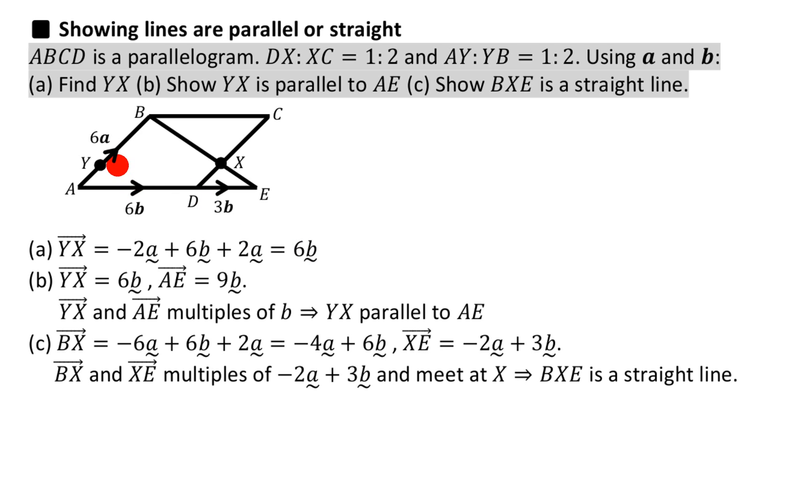Alright, so this is useful for the next bit. From Y to X is 6b. Part B is asking me to show YX is parallel to AE. We just worked out YX - it was 6b - and we have to show it's parallel to AE. What is AE? AE is 9b. 6b plus a further 3b makes 9b.